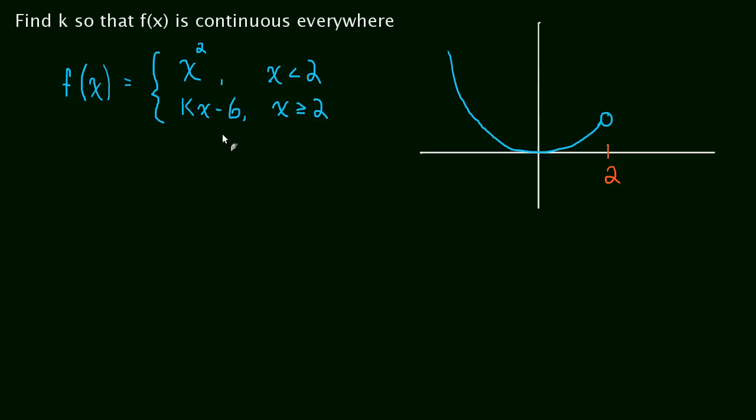When x is greater than or equal to 2, we have kx minus 6, which is just the equation of a line, where k is the slope, and this is the line. And k, that's what we're trying to find.